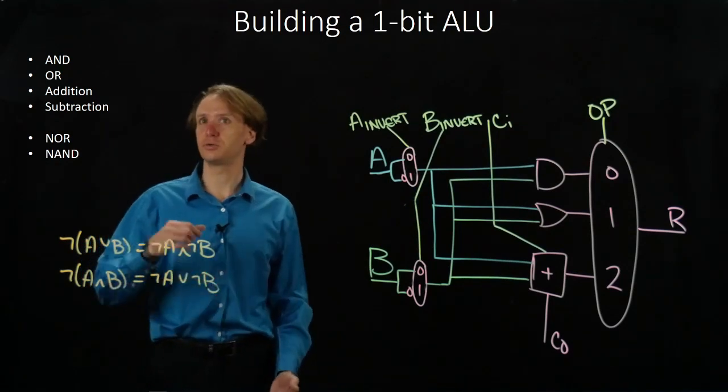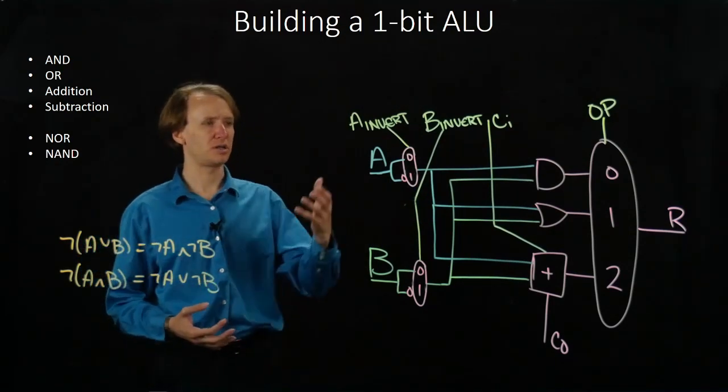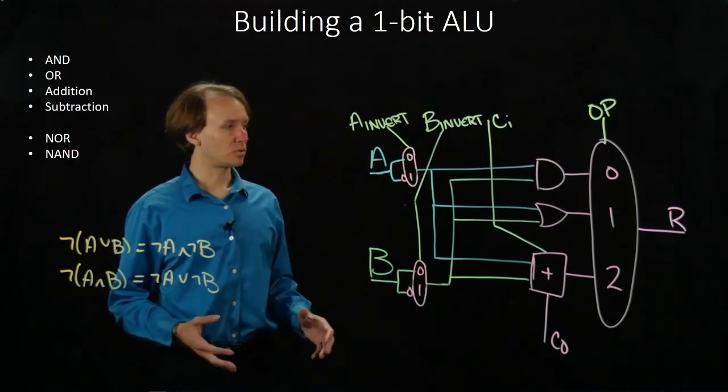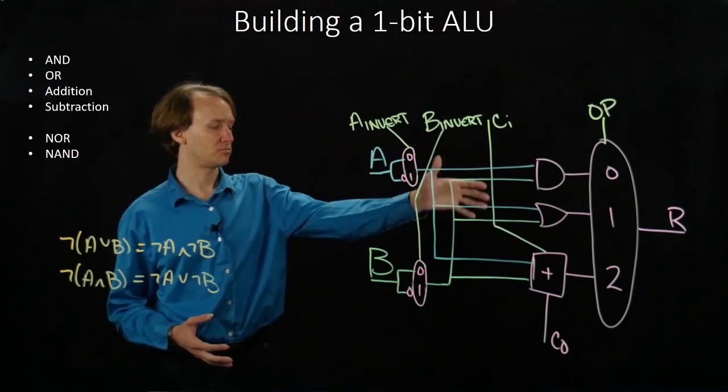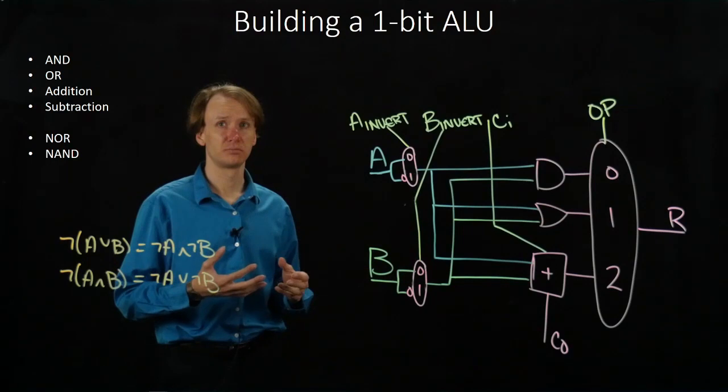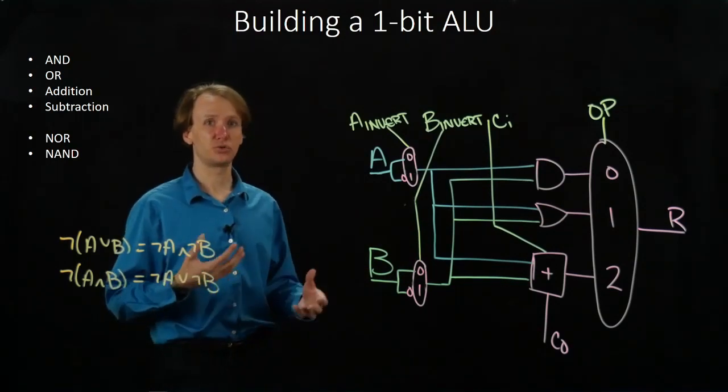This will now allow me to do all six of these operations for any one-bit pair of inputs. So next, we're going to look at how we can take this and connect it together to build a 32-bit ALU. It's going to be a similar process to what we've done before, so it shouldn't be too bad.